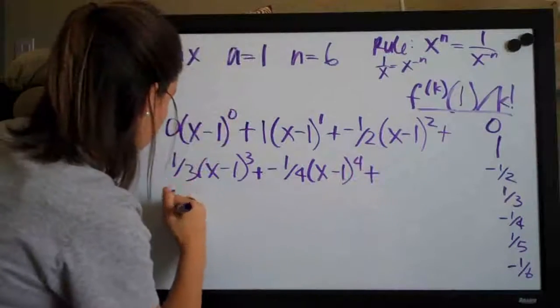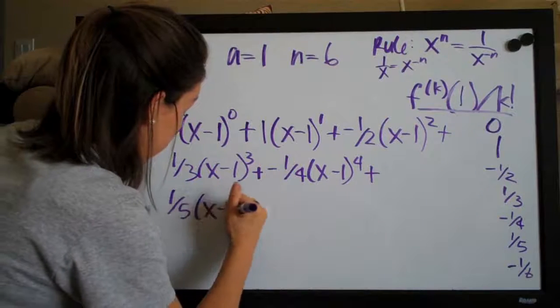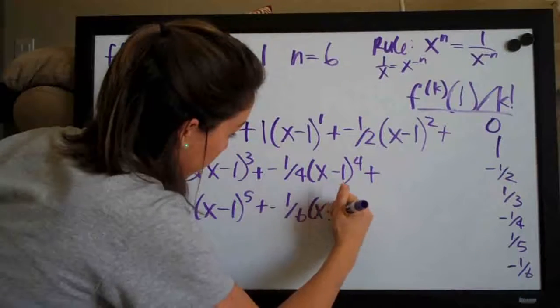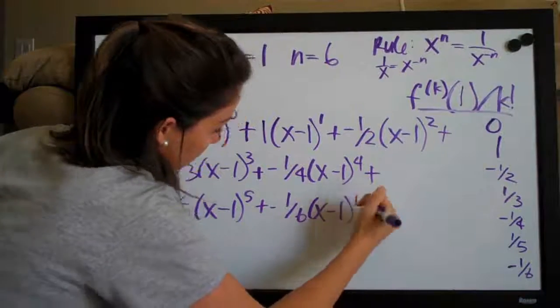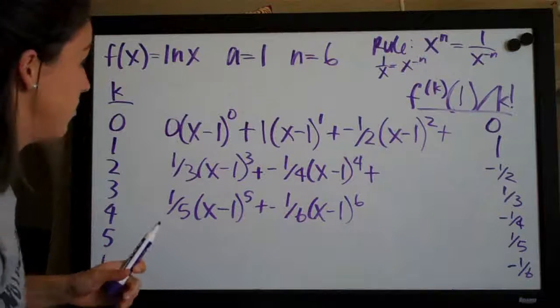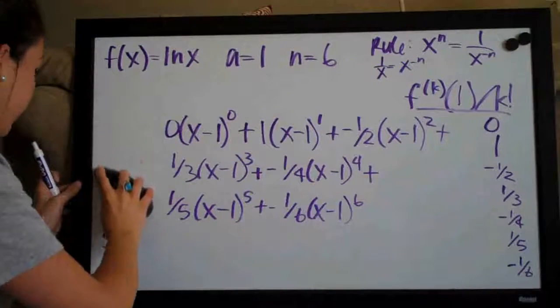Plus one-fifth times x minus one to the five plus negative one-sixth times x minus one to the sixth. And that's our Taylor polynomial and all we need to do now is simplify it.